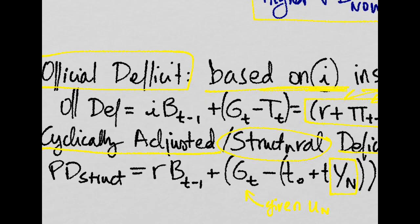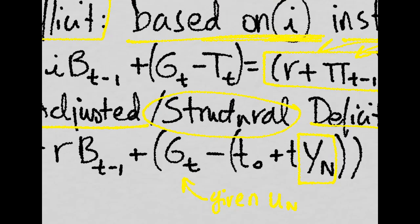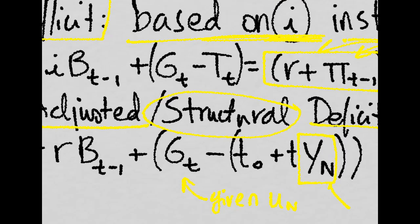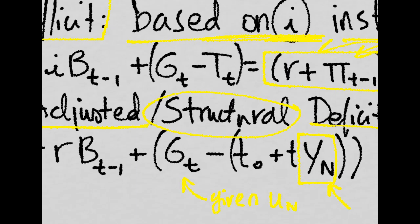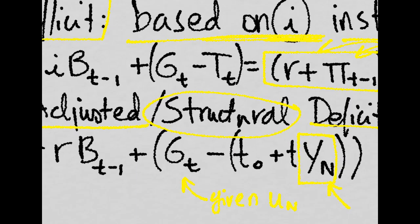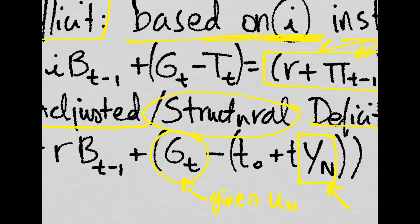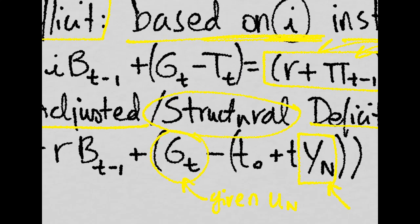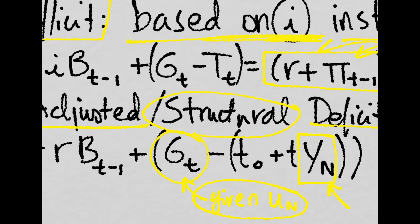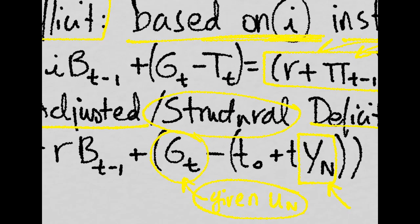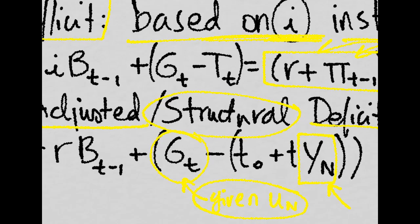So the structural public deficit differs from the normal that we will be using here the natural rate of output. Remember, the structural level of output. And we could also actually make G endogenous using the function of the natural level of unemployment in the economy. And that will give us the structural deficit.